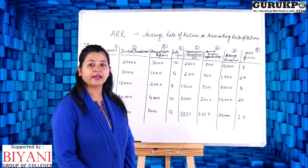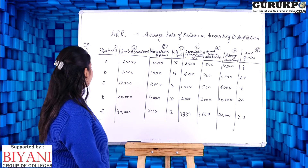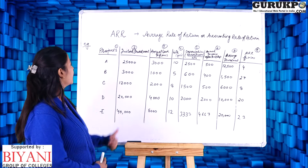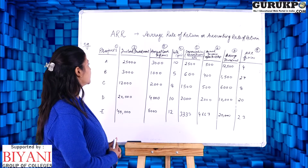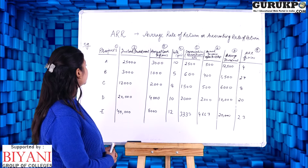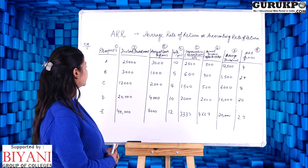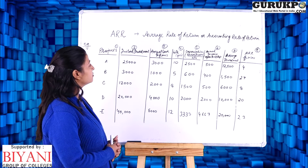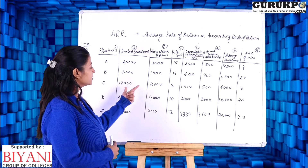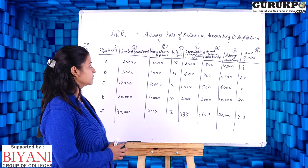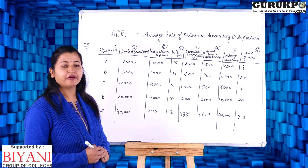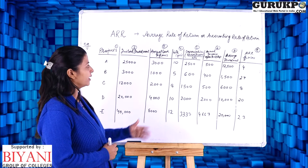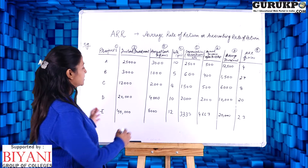Now let us take an example of average rate of return. There are 5 projects A, B, C, D, and E. Initial investments are: A = 25,000; B = 3,000; C = 12,000; D = 20,000; E = 40,000. Annual cash inflows are: 3,000; 1,000; 2,000; 4,000; and 8,000 respectively. The estimated life of the projects is: 10, 5, 8, 10, and 12 years.